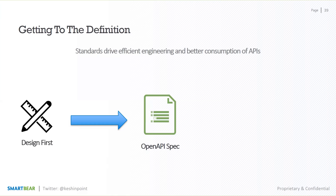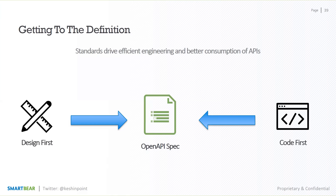But what happens when you have existing legacy APIs which don't have a specification in place? You have many old RESTful APIs which don't have a standard already defined. We call that the code-first approach, where you have an existing codebase and now need to think about how to generate the definition so that moving forward you can update it and focus on a definition-driven approach.